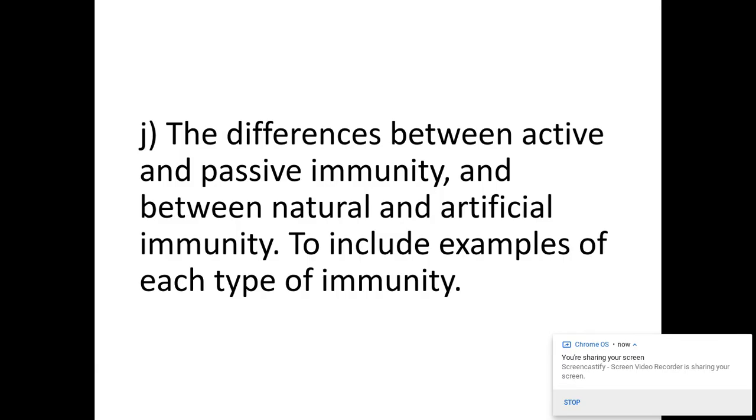We are looking at specification point J, which is the differences between active and passive immunity and also natural and artificial immunity.